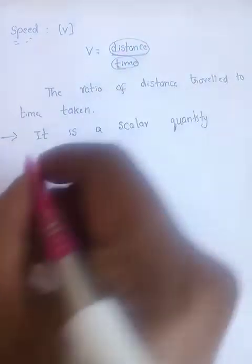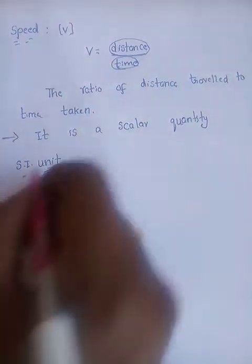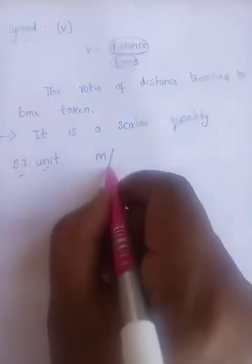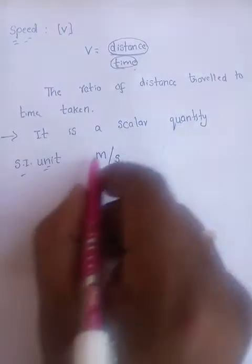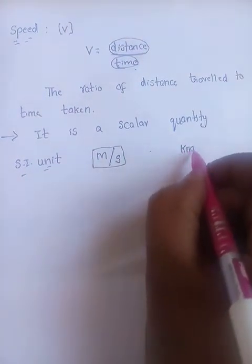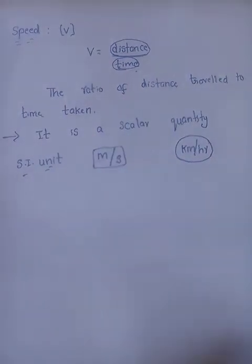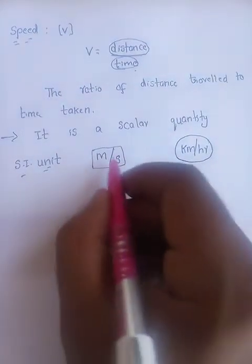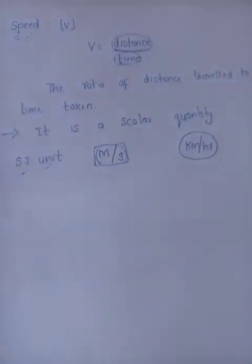What are the SI units? Distance is measured in metres and time is measured in seconds, so the unit of speed is metre per second. We should not use kilometre per hour as the standard unit. If a question is given in kilometre per hour, we should convert it into metre per second. Basically, we should convert all distances into metres and time into seconds.